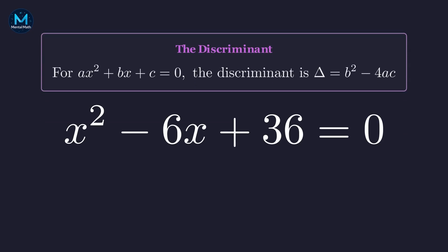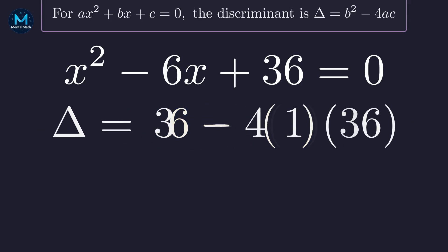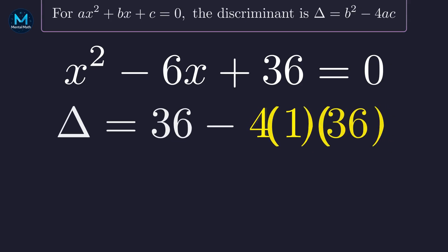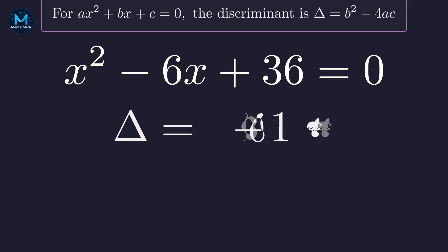For our equation, a is 1, b is negative 6, and c is 36. Plugging these into the discriminant formula, let's evaluate negative 6 squared. That's 36. Now the product 4 times 1 times 36. That's 144. Now we subtract. We get negative 108. A negative discriminant means we're entering the complex number realm. No real solutions here.